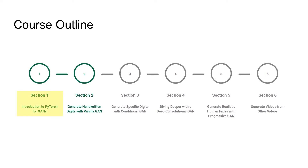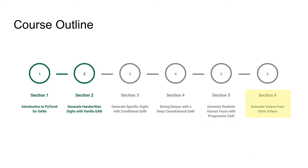In section 1: Introduction to PyTorch for GANs. In section 2: Generate Handwritten Digits with Vanilla GANs. In section 3: Generate Specific Digits with Conditional GANs. In section 4: Diving Deeper with a Deep Convolutional GAN. In section 5: Generate Realistic Human Faces with Progressive GANs. In section 6: Generate Videos from Other Videos.